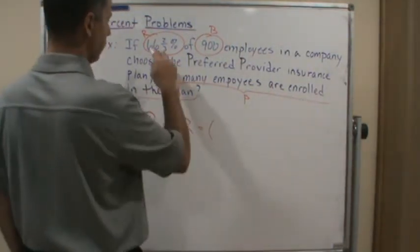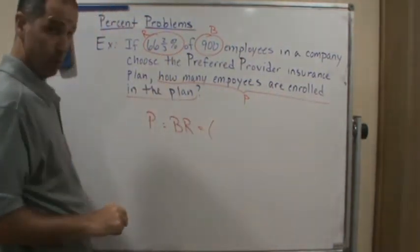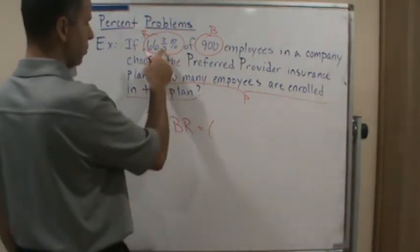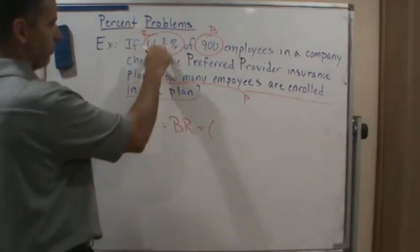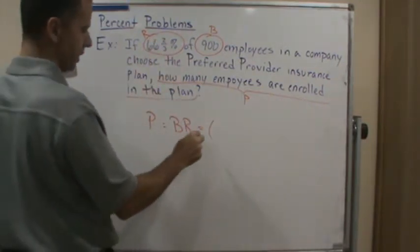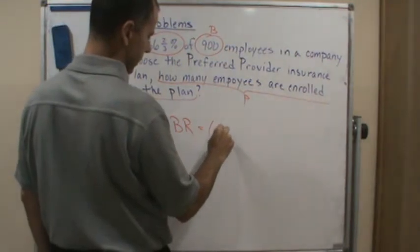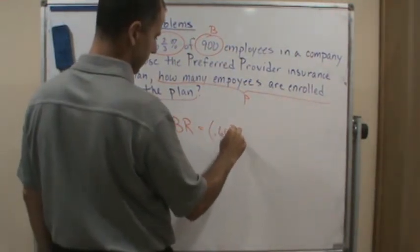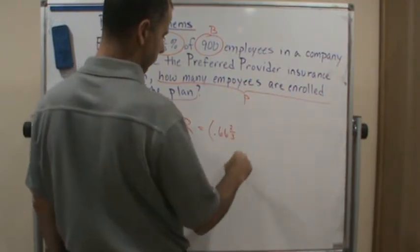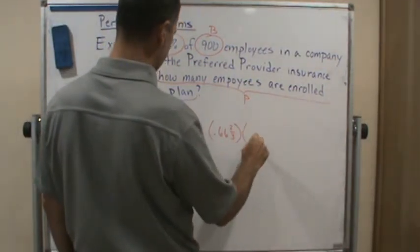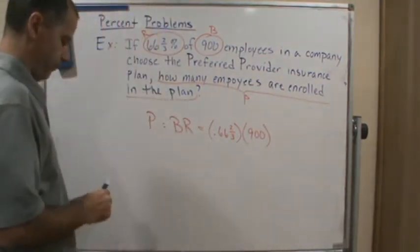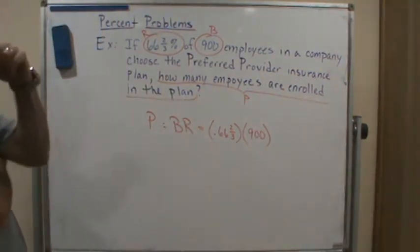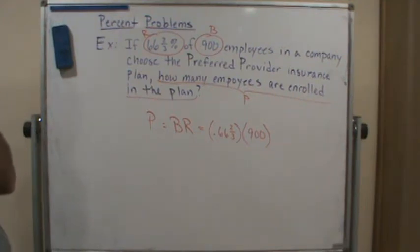So again, the rate we're going to write as a decimal. So this is two-thirds, we're going to write as, again the fractional part we kind of leave it to the side. So this is going to be 0.66 and two-thirds, times 900.